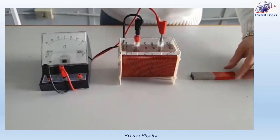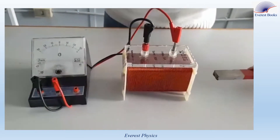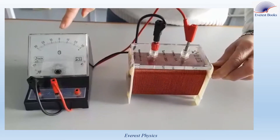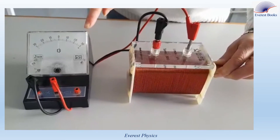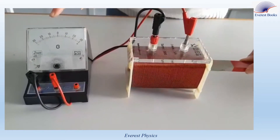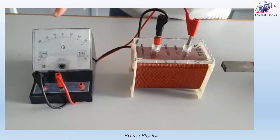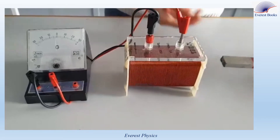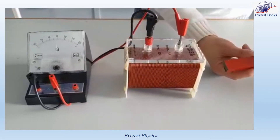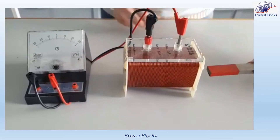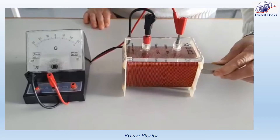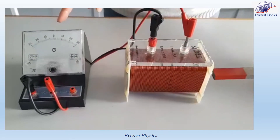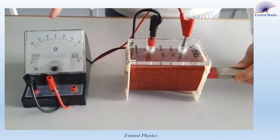But what happens if I move the magnet towards the coil? You see that the needle deflects in a certain direction. And when I move the magnet away from the coil, the needle deflects in the opposite direction. Now I will reverse the pole of the magnet and repeat the same procedure. The needle is deflected in two opposite directions.